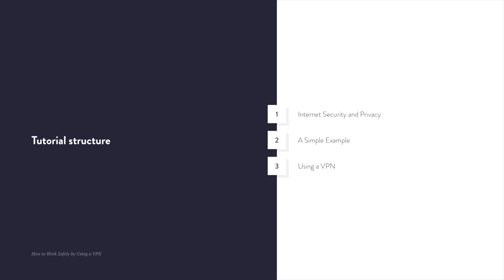Hello and welcome to an Envato Tuts Plus tutorial. I'm Adi Pordilo, and in today's tutorial you'll learn how to work safely by using a VPN service and also why it's important to use one. Here's a breakdown of what we'll cover: first, we'll have a quick look at internet security and privacy and why you should care about it. Then we'll follow it up with a simple example. And finally we'll talk about VPNs, or virtual private networks, how they work, the benefits, and a few top picks.